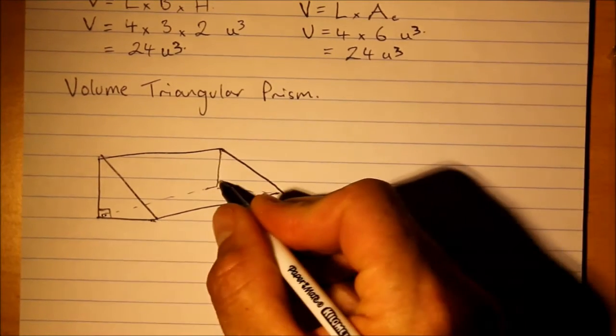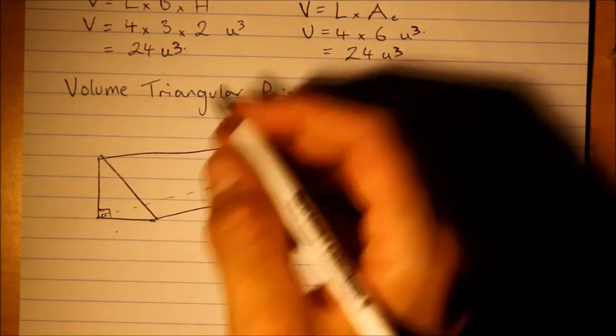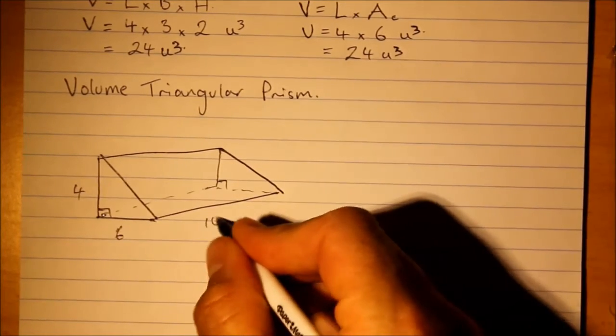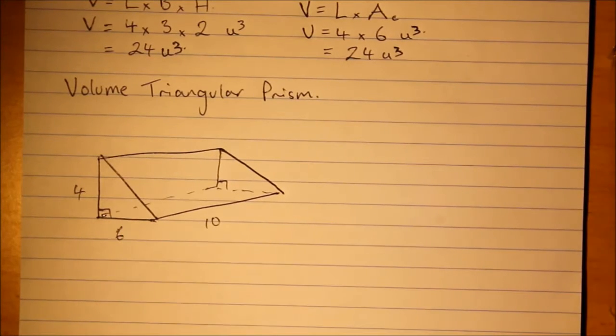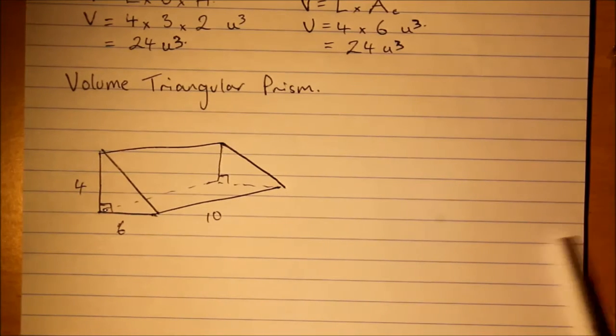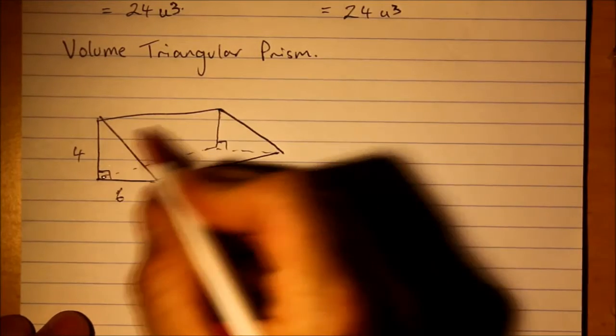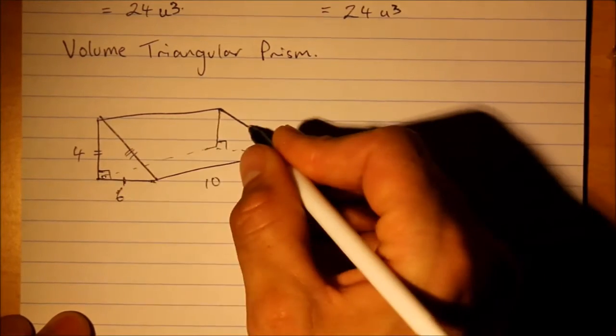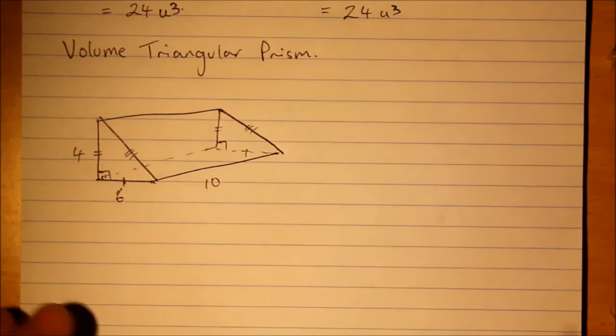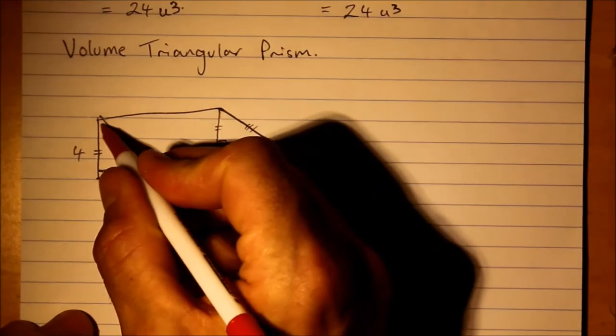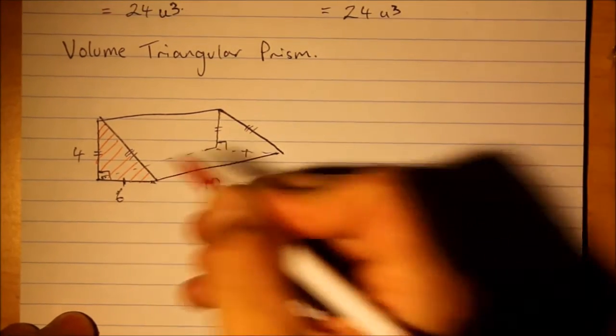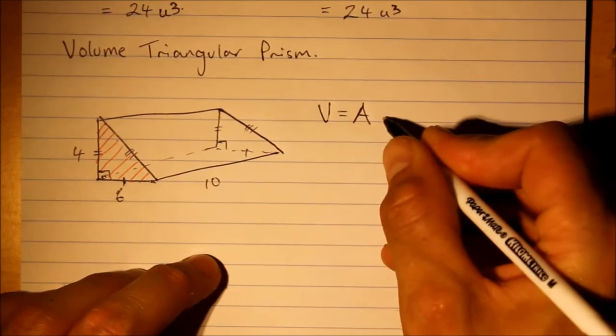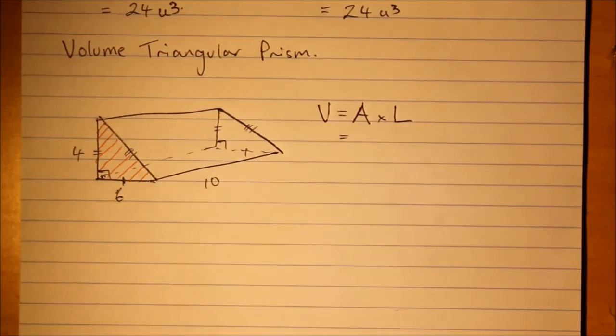Volume of a triangular prism. Let's have a look. Let's make up some dimensions here. Six by four by ten units. So, when we are faced with a problem like this, we first identify is it a prism? Well, if we go ahead and put this in, then we are saying that the cross-section is uniform. So, what we have to do is calculate the area of this cross-section here. Because we are going to follow the formula, volume is area times length.